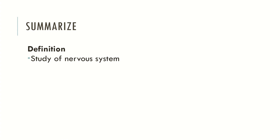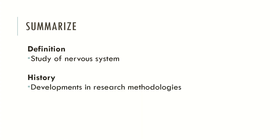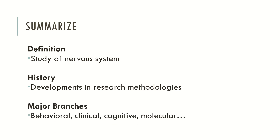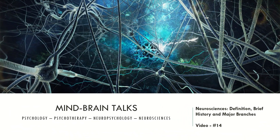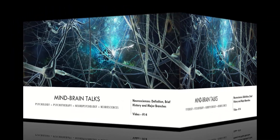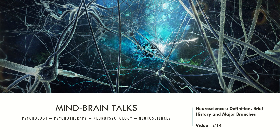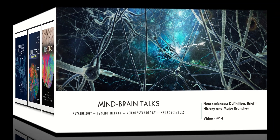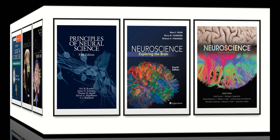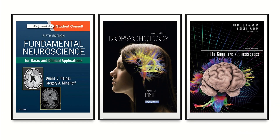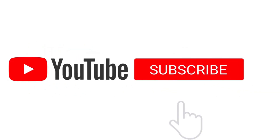To summarize the contents of this video: we looked at the definition of Neurosciences, which is mainly the study of the nervous system. We looked at the history of Neurosciences and how it developed in research methodologies. We also looked at the major branches — behavioral, clinical, cognitive, and molecular neurosciences. This was a short video to explain the fundamentals of Neurosciences. In the future I will produce more videos describing these domains in greater depth. Don't forget to see the video description for today's recommended manuals. If you like what I'm doing here, please consider subscribing and hitting the bell for notifications. Welcome to MindBrainTalks and I hope to see you in the next video. Bye!